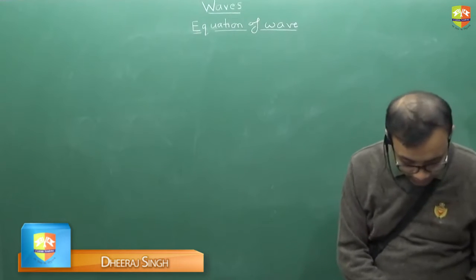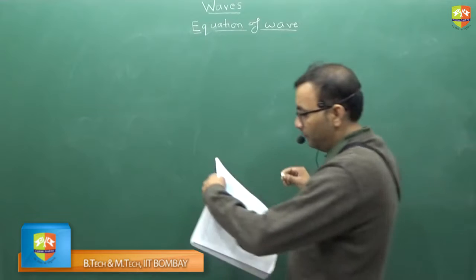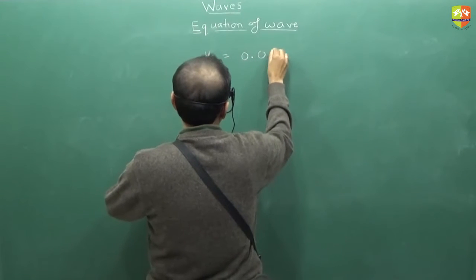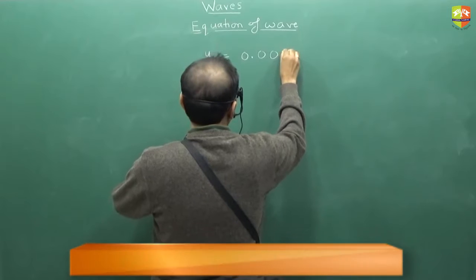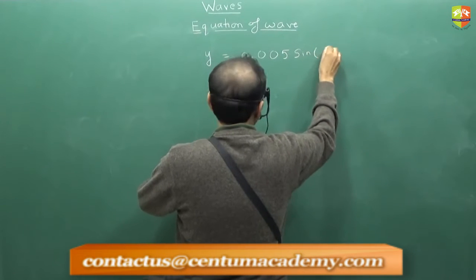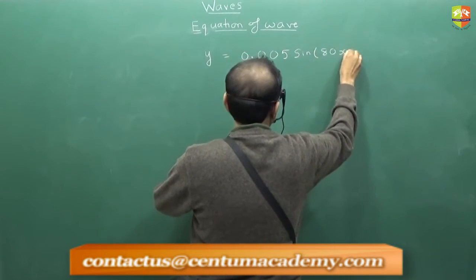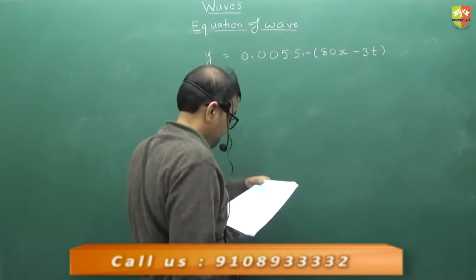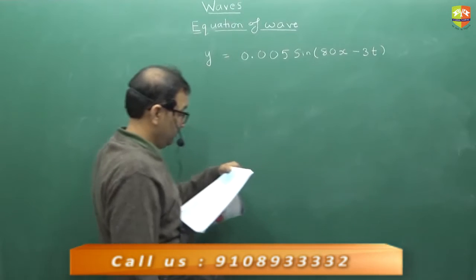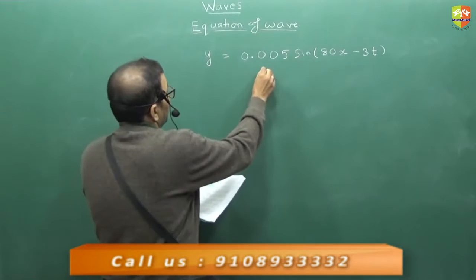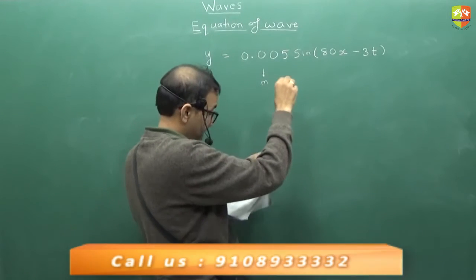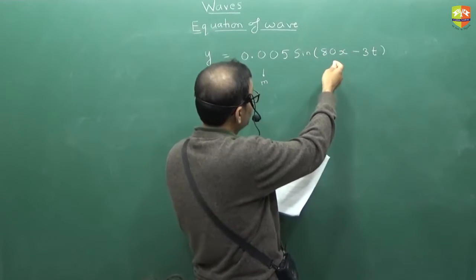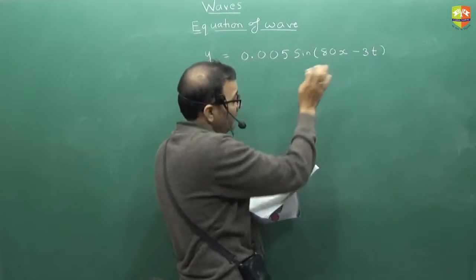Fine, so let us take a question from your NCERT. Write down y equals 0.005 sin of... This is in meters, 80 radians per second, 80 radians per minute, so they are all in the SI units.